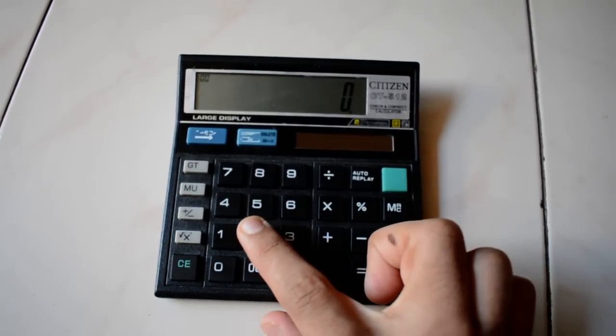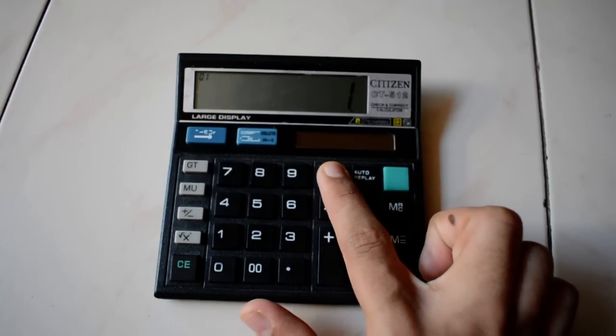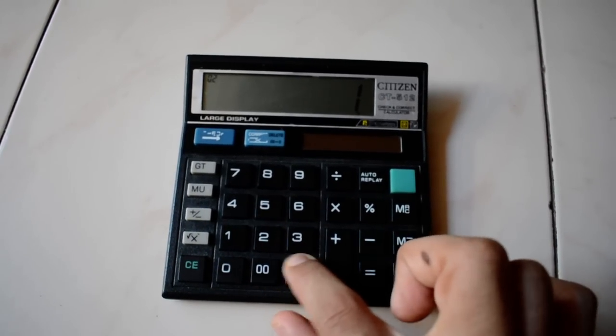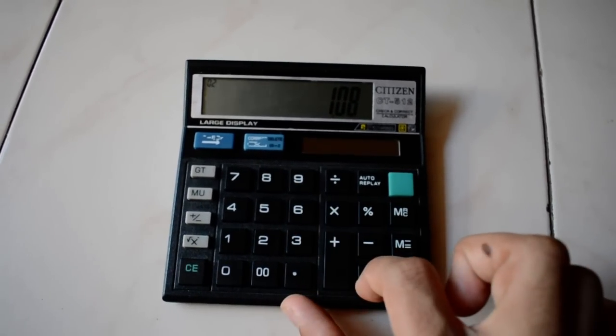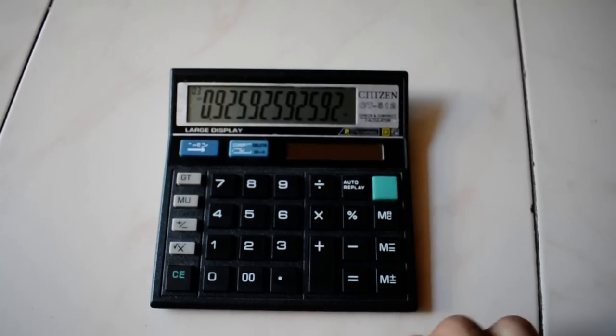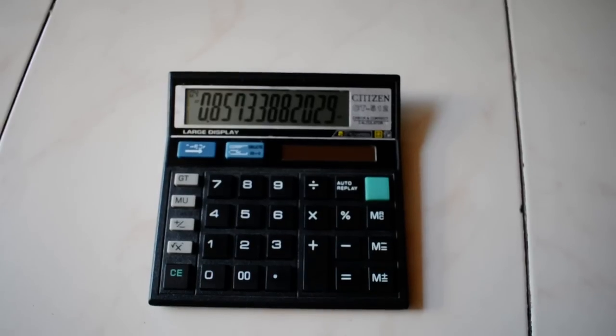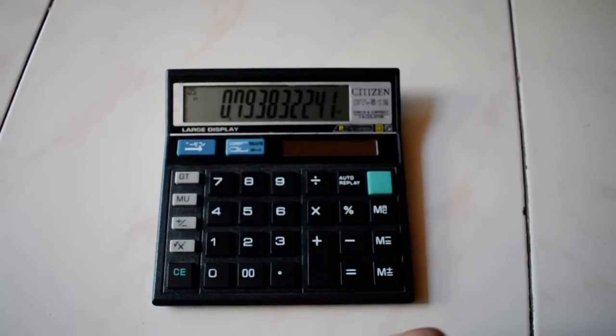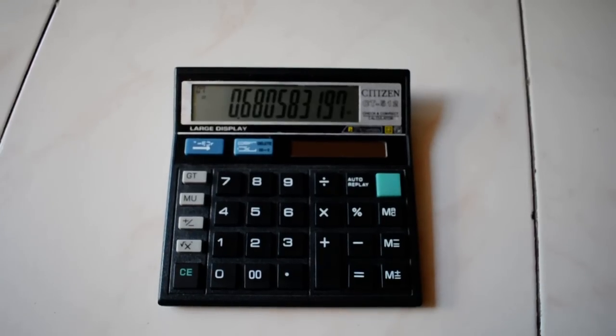What I will do is I will press 1 divided by 1.08. This is the present value factor of the first year, second year, third year, fourth year, fifth year, and so on.